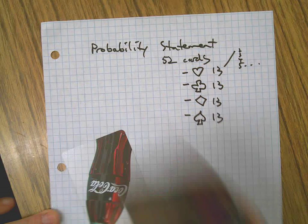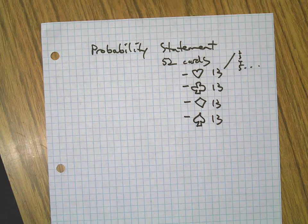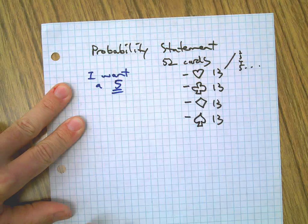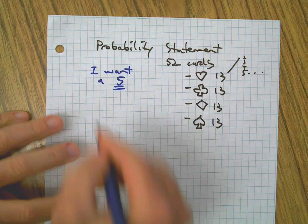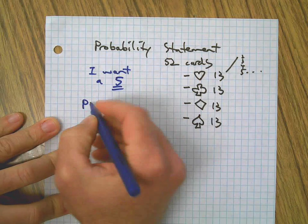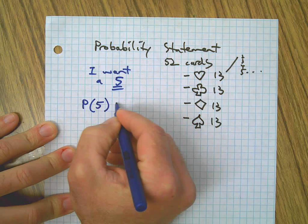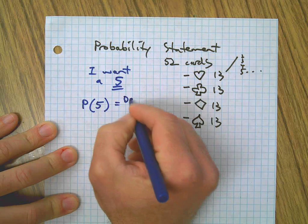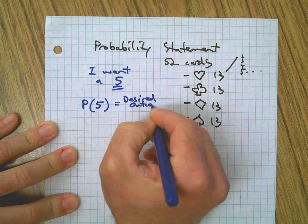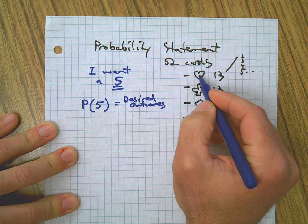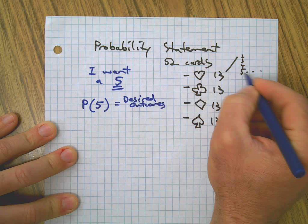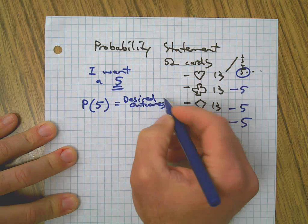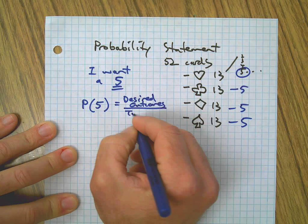I'm going to write a probability statement because I want a 5. So we identify what we want: probability of a 5. How many fives? How many of my desired outcomes are there in a deck of cards? Well, in each suit—hearts, clubs, diamonds, and spades—there is a 5 contained in each one of those four groups, so there's actually four of those.